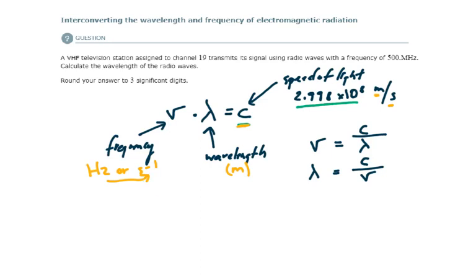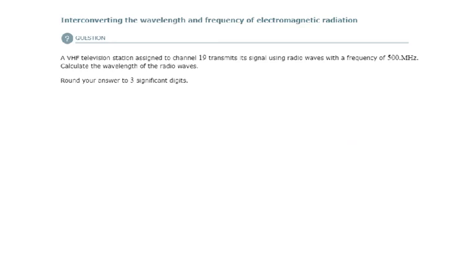So let's tackle this problem. First, we want to list our givens. We have a frequency of 500 megahertz, and they want us to determine the wavelength. The speed of light is always going to be the same. This constant is 2.998 times 10 to the 8 meters per second.